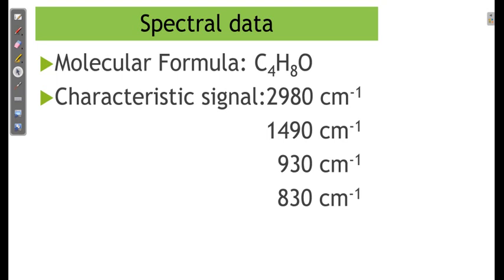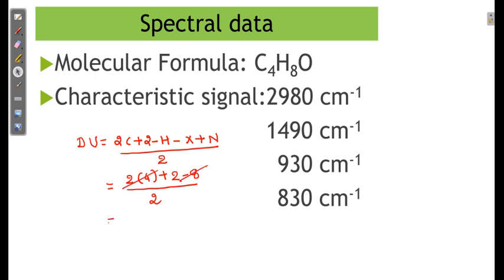The degree of unsaturation, or DU, equals (2C + 2 - H - X + N) divided by 2. According to this equation with 4 carbons: 2 times 4 plus 2 minus 8, with no X or nitrogen, divided by 2. We cancel out terms and get 2 divided by 2, so DU equals 1.